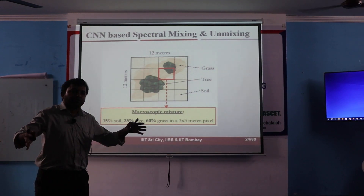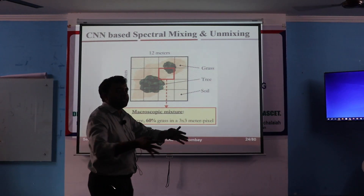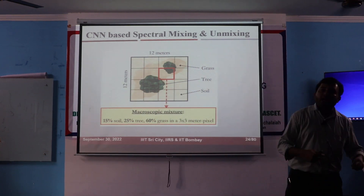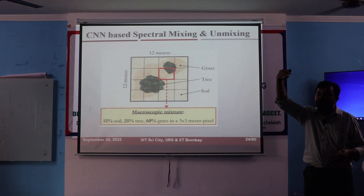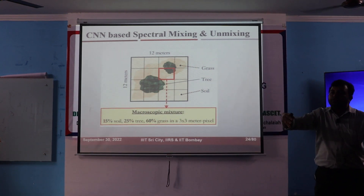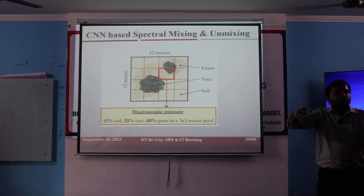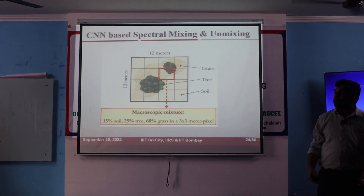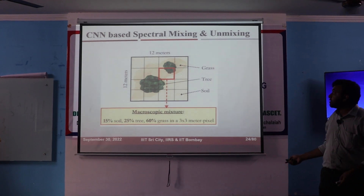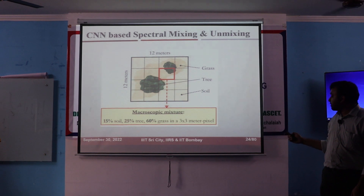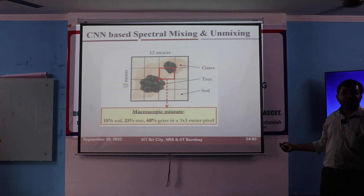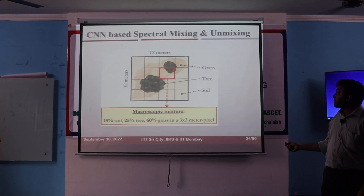When you have coarse spatial resolution — when you want high spectral resolution, your spatial resolution will be coarse. So what will happen is that you will have this type of mixing which is called spectral mixing.